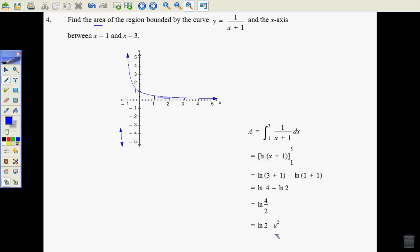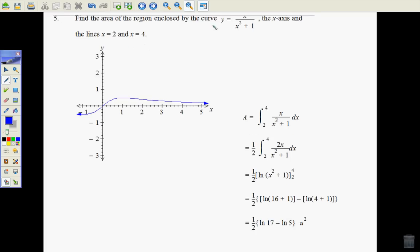In question 5, again we've got x/(x²+1), a little bit harder. This is what our graph looks like, and we're going between 2 and 4. So again it's all above the x-axis, so there's no worries with the absolute values.